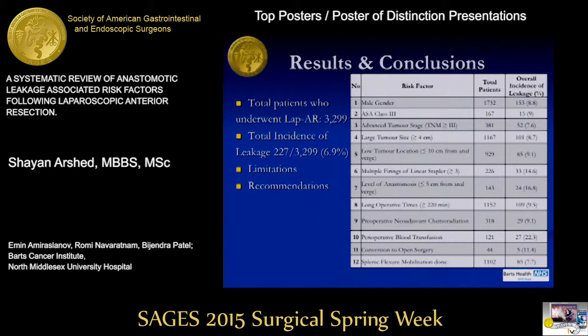We studied about 20 risk factors overall and identified 12 which showed higher incidence of leakage: male gender at 8.8%, ASA class 3 at 9%, advanced tumor stage TNM 3 or more at 7.6%, large tumor size of 4 cm or more at 8.7%, lower tumor location less than 10 cm from the anal verge, multiple stapler firings (3 or more), level of anastomosis 5 cm or less from the anal verge, longer operative times, administration of neoadjuvant chemoradiation, blood transfusions, and conversion to open.